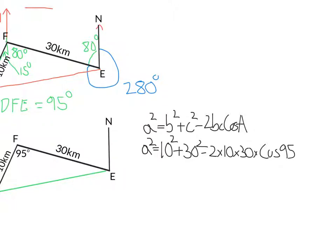Now, I would put that all into my calculator and we would get... So we would get that A squared is equal to 1052.29, etc., etc., right?